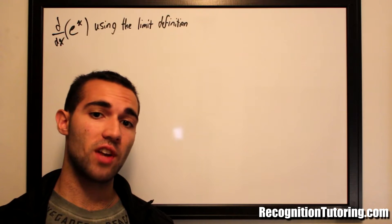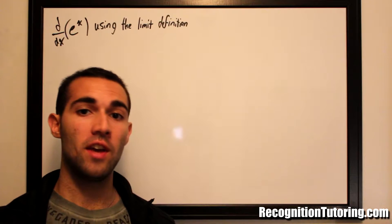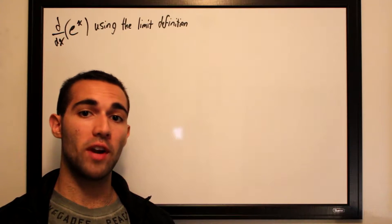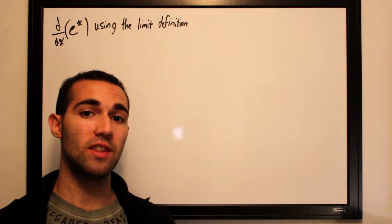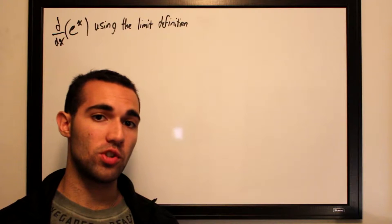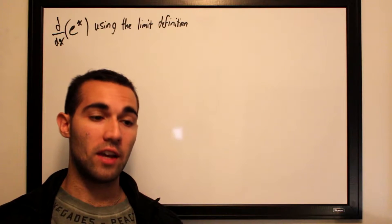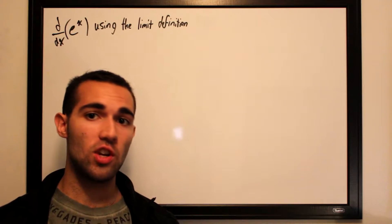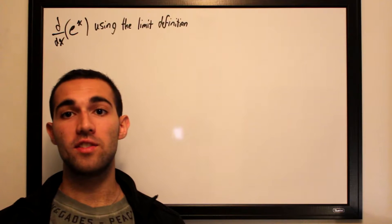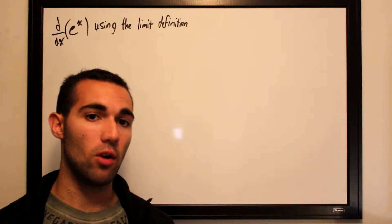In one of my more recent videos, I provided a proof on how to take the derivative of e to the x using implicit differentiation. In this video, I'll be providing a quick proof on how to take the derivative of e to the x using the limit definition of the derivative, which is the limit as h approaches 0 for f of x plus h, minus f of x, all divided by h.